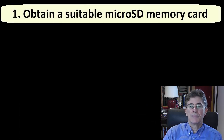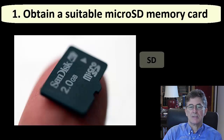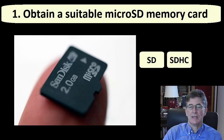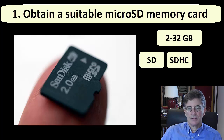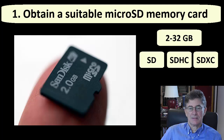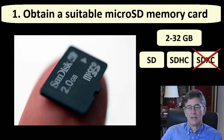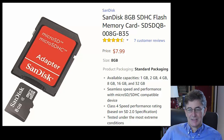Here are the steps in more detail. Obtain a suitable microSD memory card with a capacity between 2GB and 32GB. If you need to buy a card, I suggest you buy an 8GB card from Amazon from a well-known manufacturer such as Sandisk or Kensington.